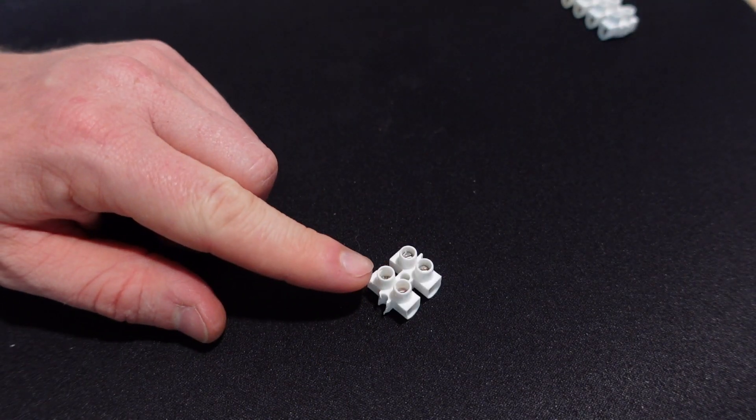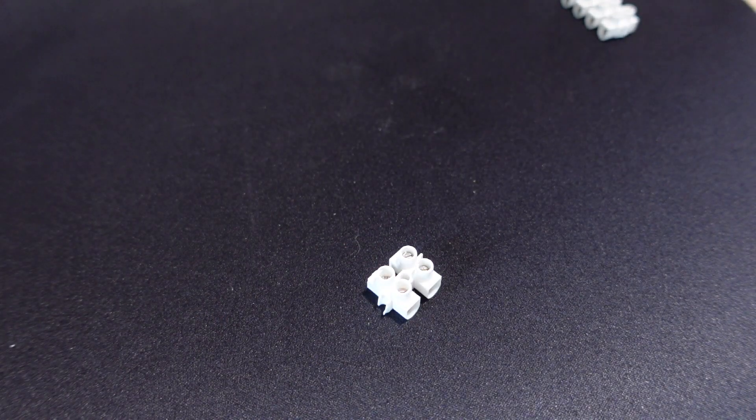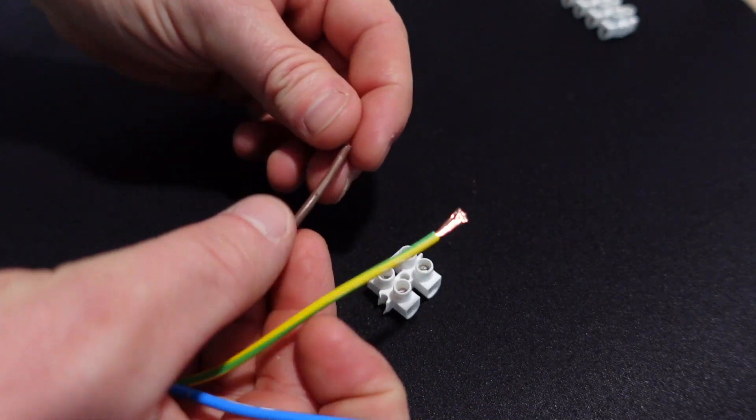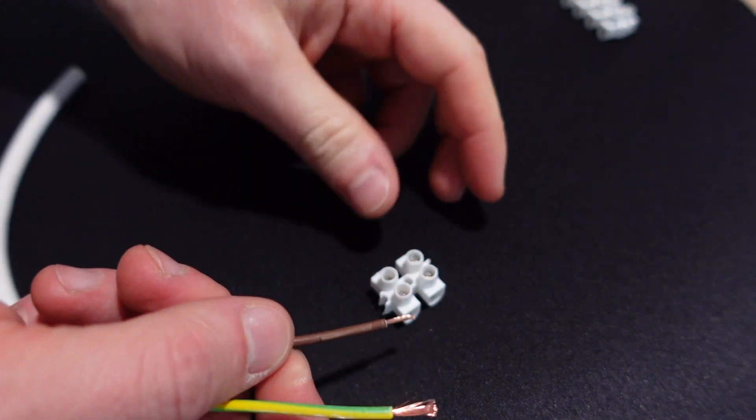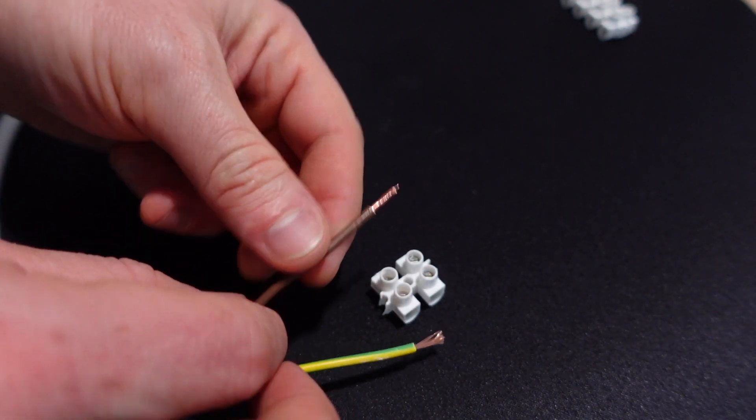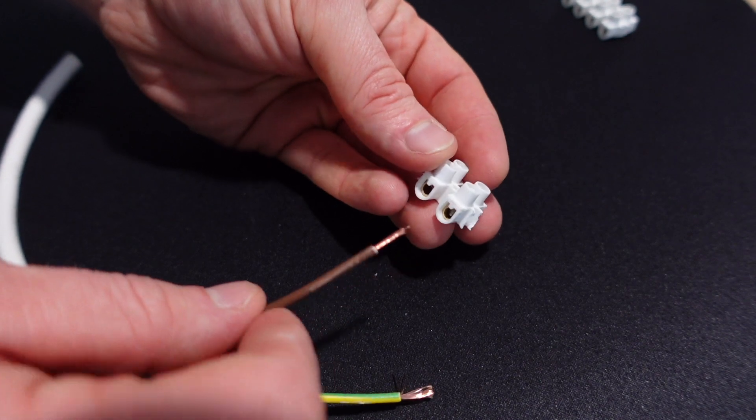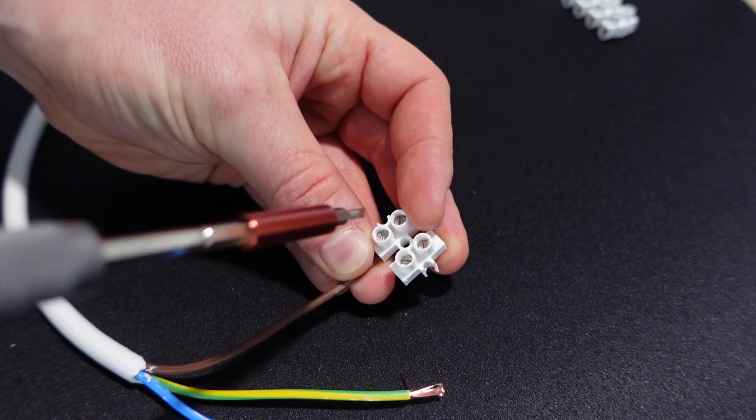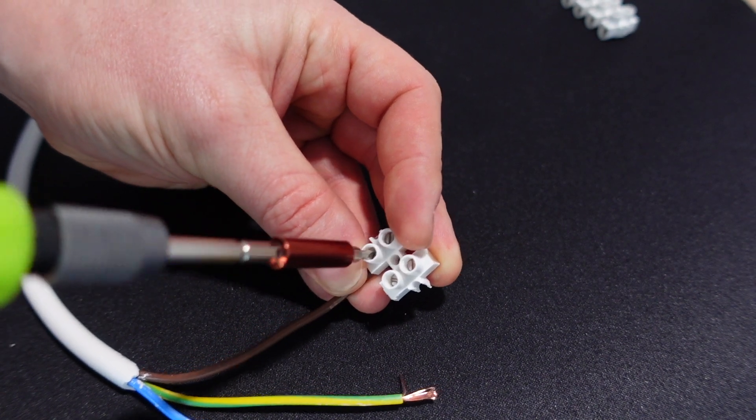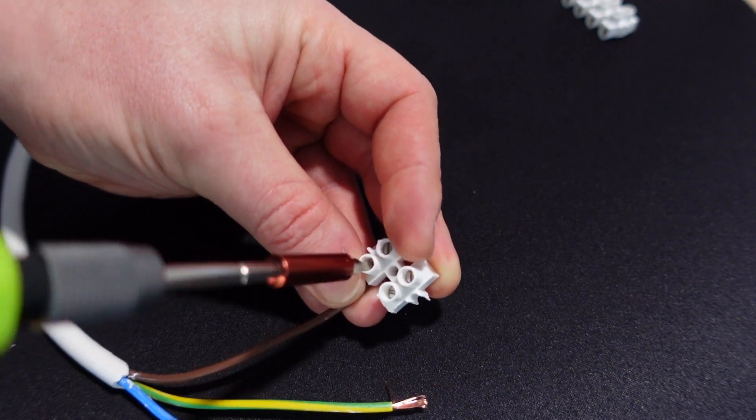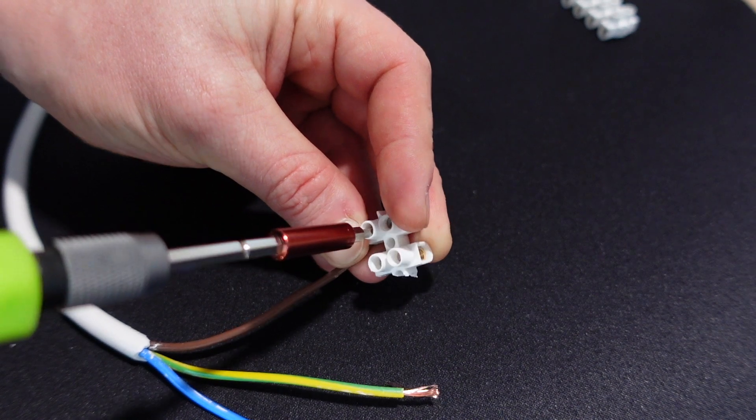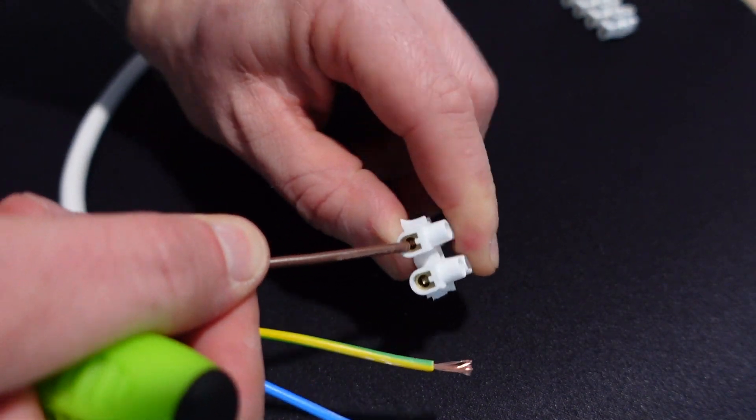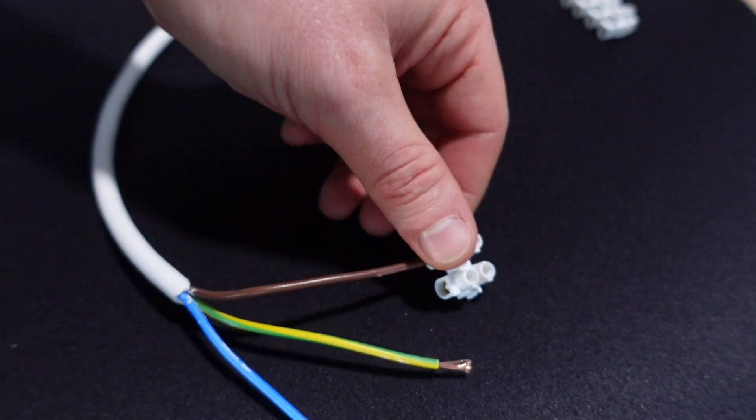There is one other key pro with the terminal strip that you won't get with some of the other solutions and that is thinner gauge or stranded wire. Now with stranded wire, some of the push fit connectors, you'll struggle to actually push them in due to the resistance of the push fit. However, with terminal strips, it's easy to just do them up with the screw with very little resistance. So stranded wires, terminal strips are actually a really good way to get a good contact.